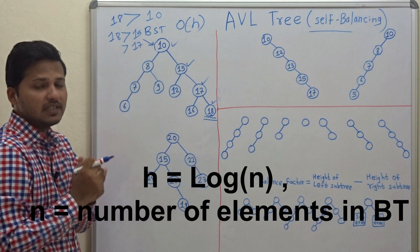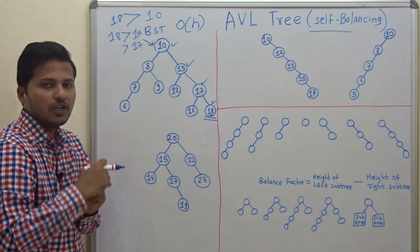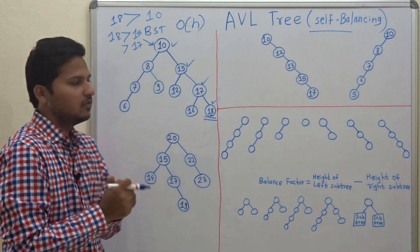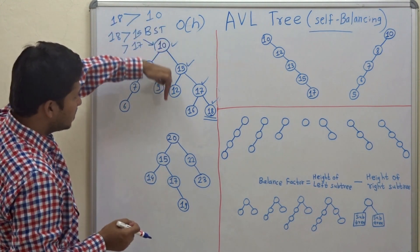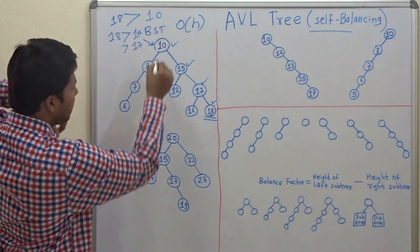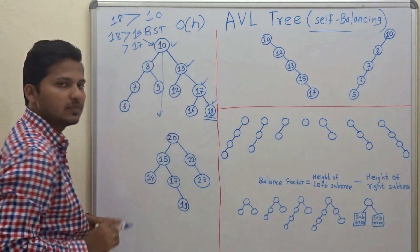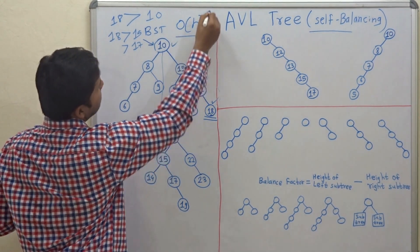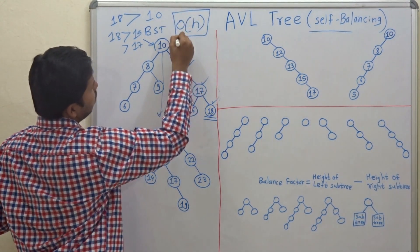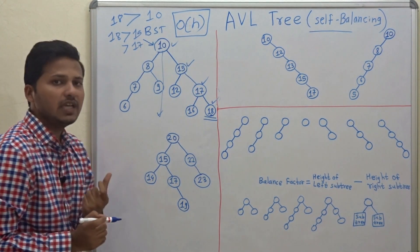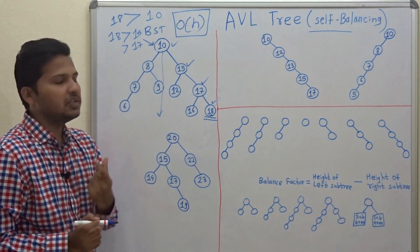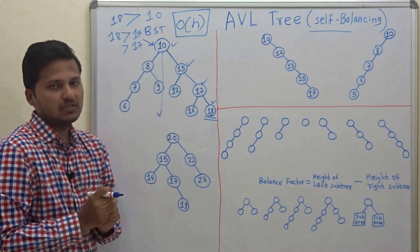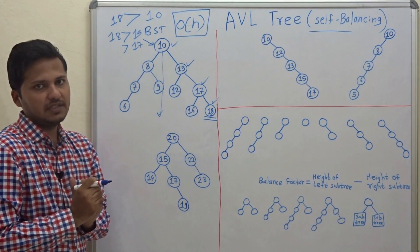We cannot go deeper than the height of the binary tree. So the worst-case time complexity for searching an element in a binary tree is always O(h), where h is the height of the binary tree.